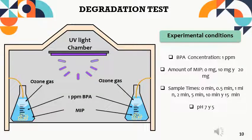For the degradation tests, these were carried out in a UV chamber where the variables were the amount of MIPs added, the sampling times, and the pH.